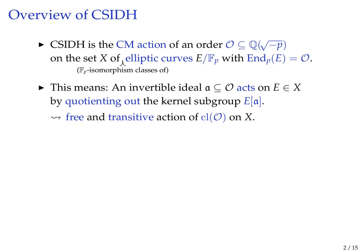Computationally, how do we compute this action? The elements of the class group are represented by invertible ideals, and so this ideal is a subset of the endomorphism ring. The action on a certain curve E is given by intersecting all the kernels of endomorphisms contained in this ideal and quotienting that out. By general elliptic curve isogeny theory, every finite subgroup is the kernel of an isogeny, so this gives you an isogeny to a different curve. You can prove that this action is also free and transitive.